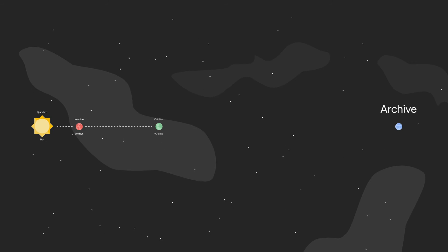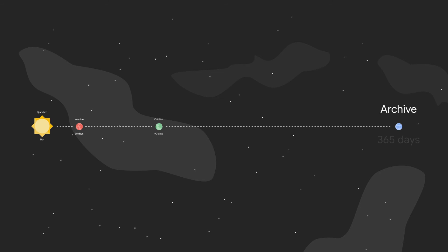Finally, there's Archive, which is outside of the solar system in this planetary analogy, since data can only be accessed once every year. So to answer the initial question, the storage option required is Nearline storage, since the access needed is between 30 and 90 days.